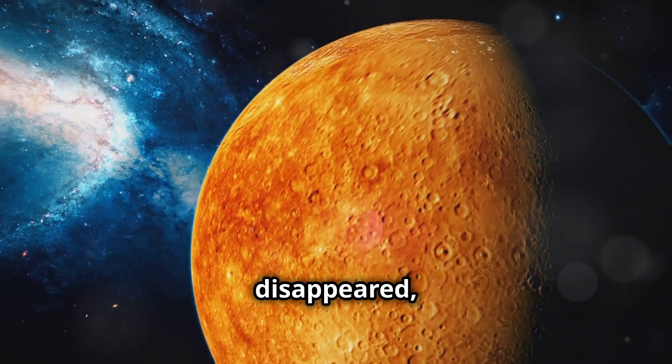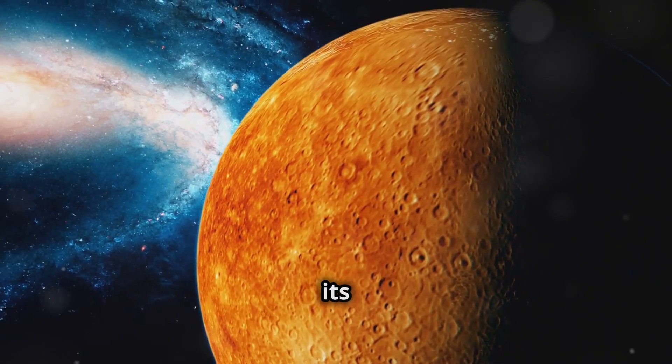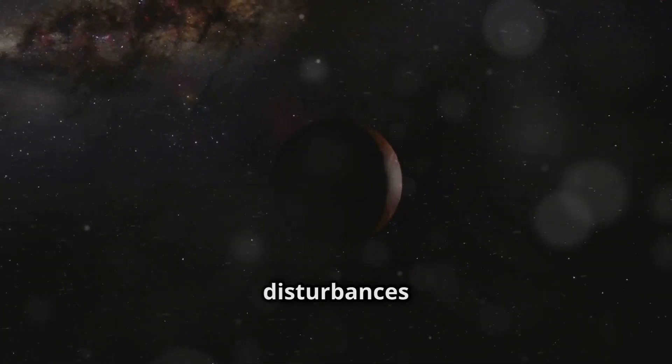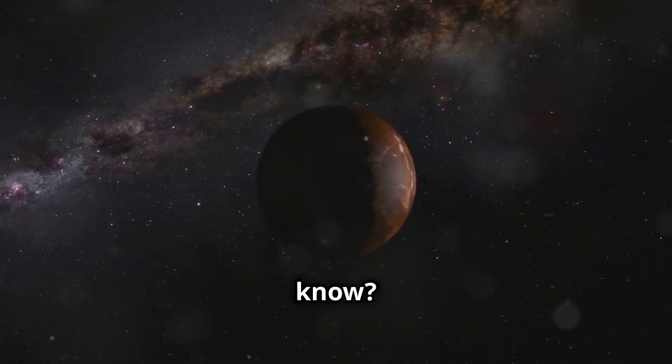If Mercury disappeared, the first to miss it would be Venus, its neighbor. Venus would miss Mercury's gravitational pull, which would cause some disturbances in its orbit.